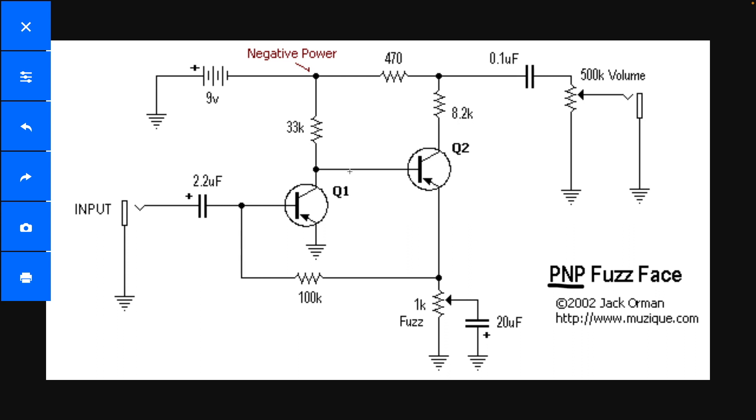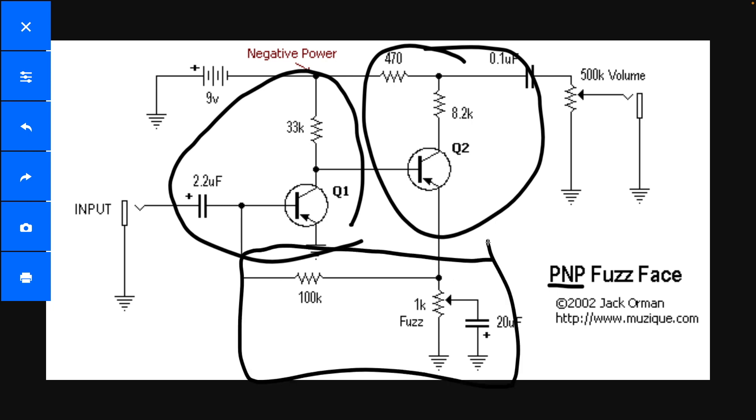So broad overview of this guy. It's basically two common emitter amplifiers. Here's one, here's the other. And then they've got a feedback network. This first common emitter amplifier is biased heavily to one side. So you get asymmetrical clipping here. And then this one is biased right in the center of our available voltage. So this is a more symmetrical stage.